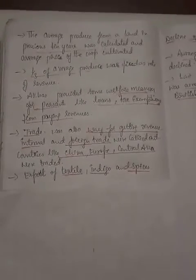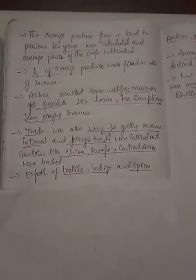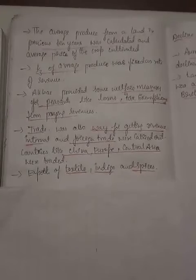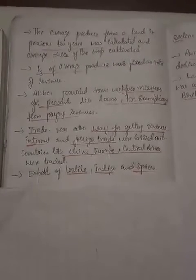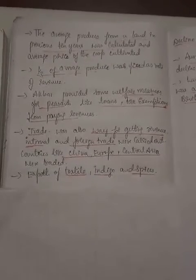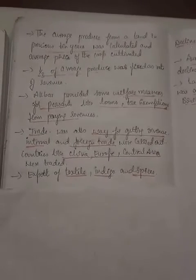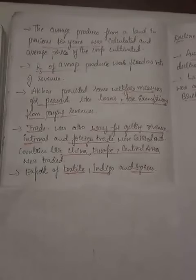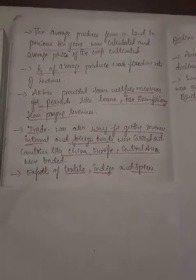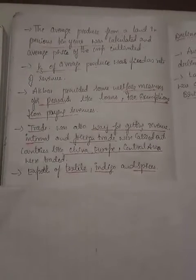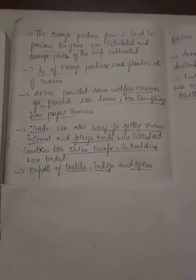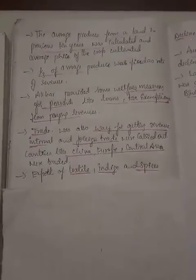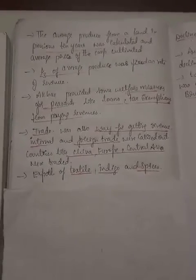After categorizing land by fertility, the average produce from the previous ten years was calculated along with the average price of the crop. Land revenue was collected at one-third of the average produce, and peasants could pay either in cash or crop. Akbar also introduced welfare measures for peasants, recognizing that farmers could only pay taxes when rainfall was adequate, land was fertile, and the yield was good.